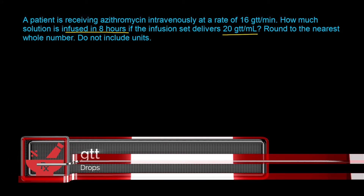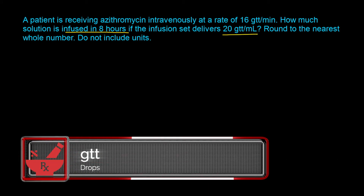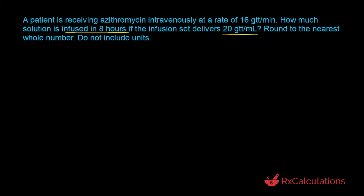Since the question is asking for volume, we need to identify the parameter that has a volume component. The calibration factor or drop factor is given as 20 drops per milliliter, so there's a milliliter component which indicates volume. The other terms are the time in hours and the flow rate in drops per minute. We're going to start off with the calibration factor and state that one milliliter contains 20 drops, then multiply by the flow rate of 16 drops per minute, so the drops cancel out and now you're in milliliters per minute.